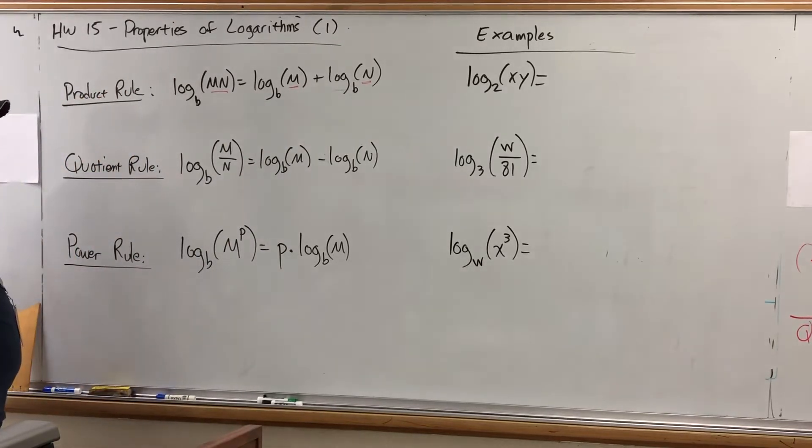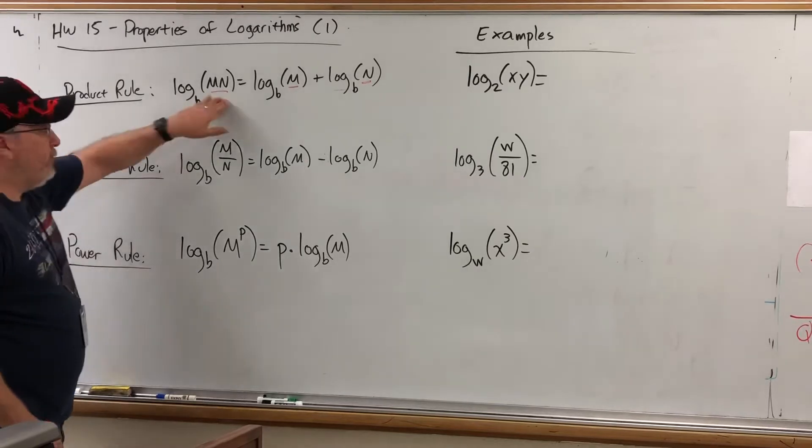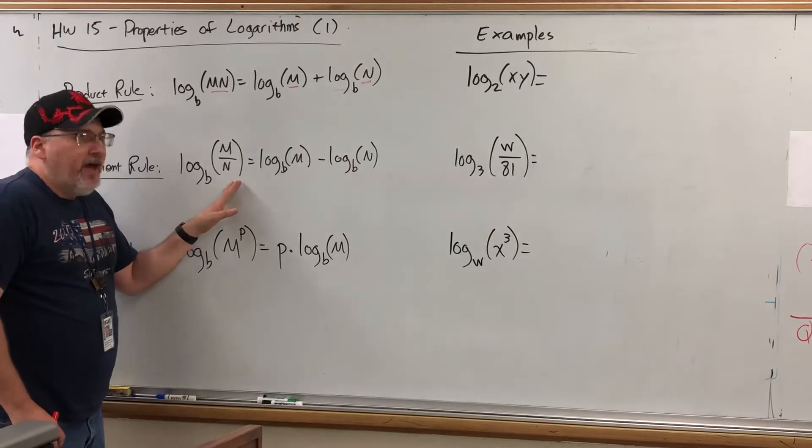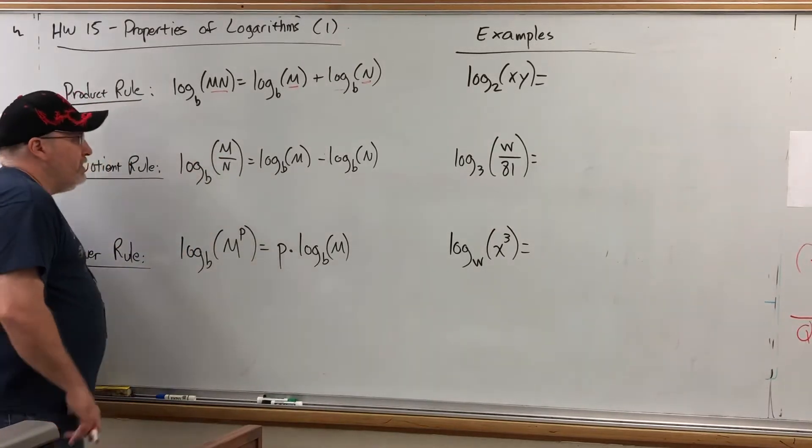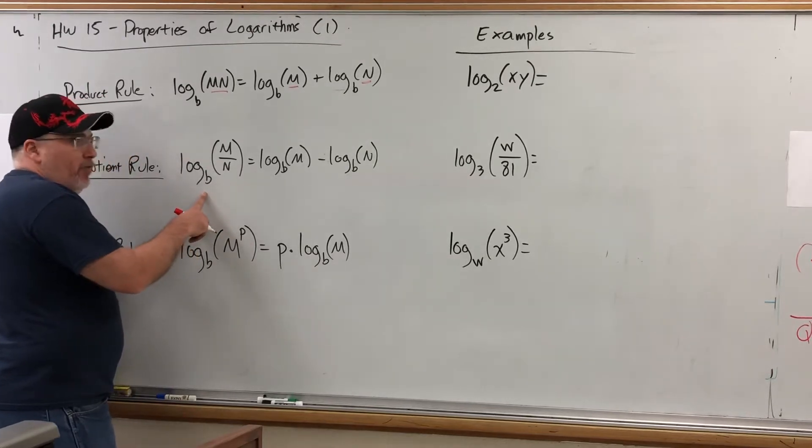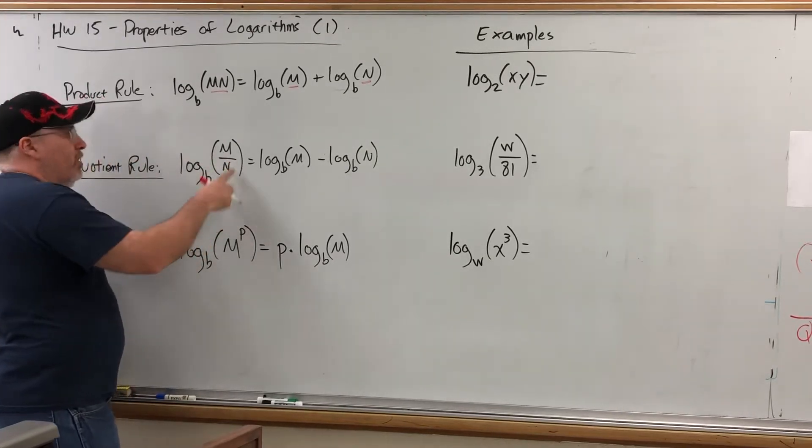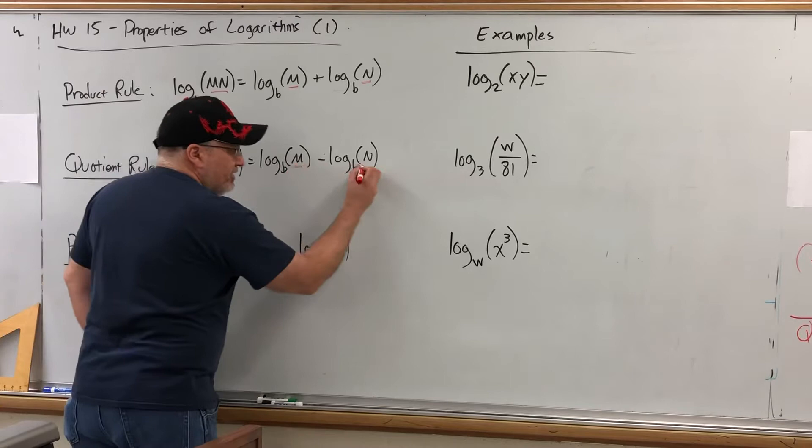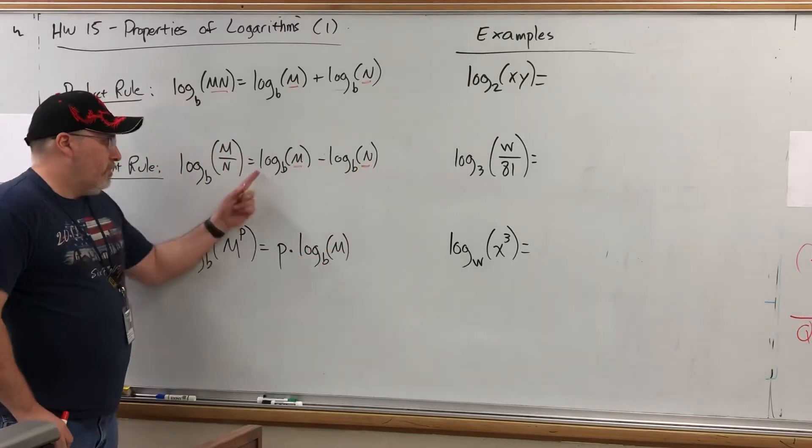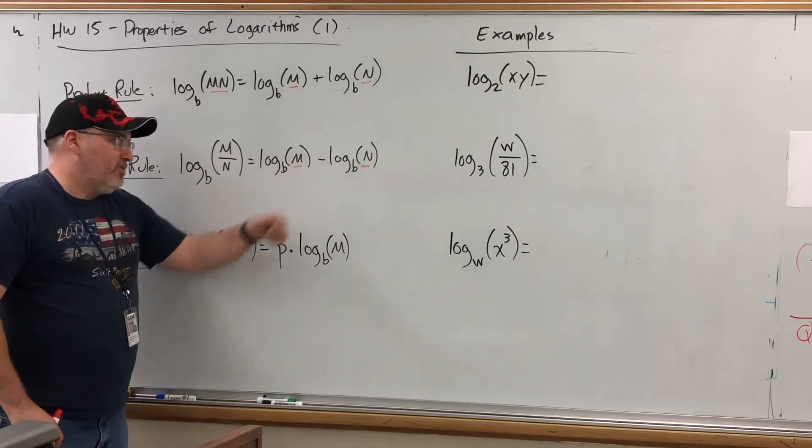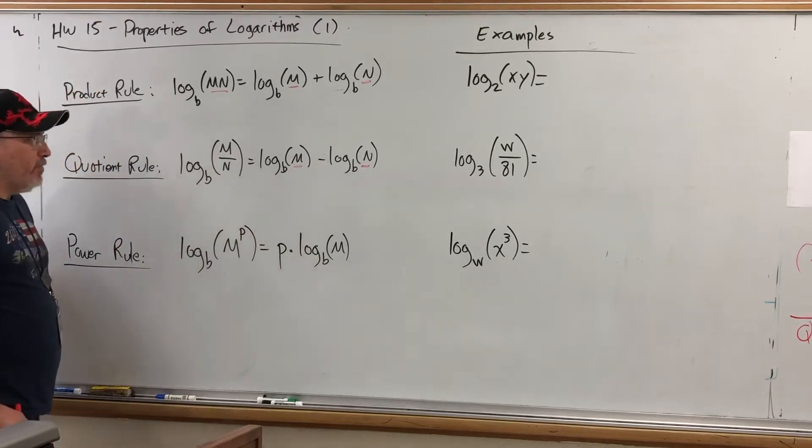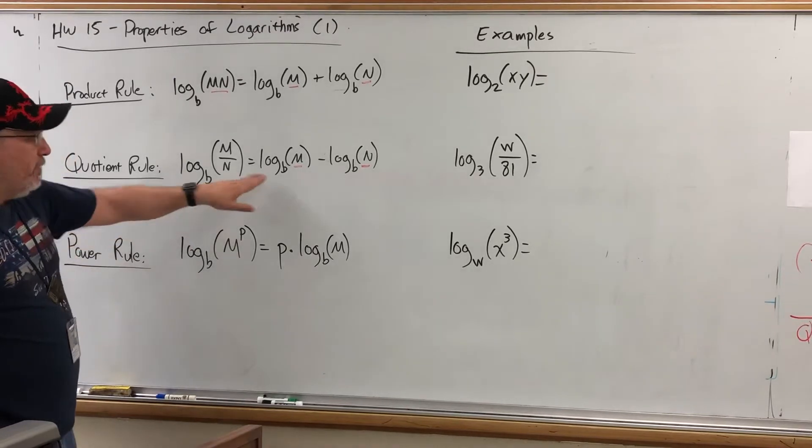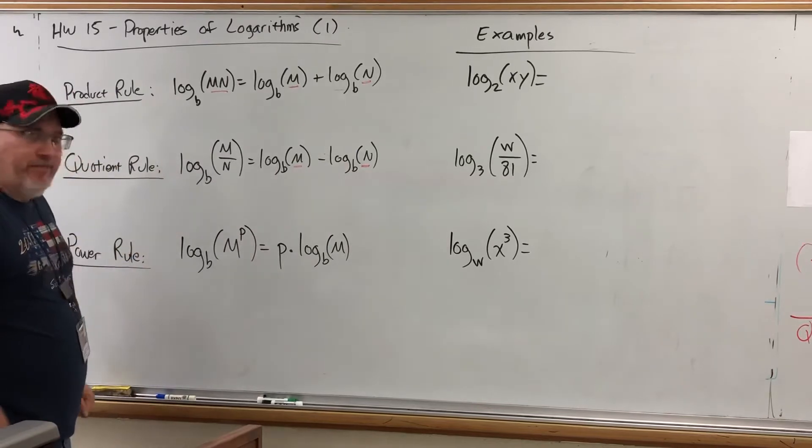The Quotient Rule pretty much says the exact same thing, except instead of the log of a product, it's equal to the log of a quotient, aka a division problem, aka a fraction. If you have a log, any base, or any allowable base, of a fraction, which we'll call m over n, then you can also separate this by giving each part of the fraction its own logarithm. It's the logarithm of the numerator minus the logarithm of the denominator. Now, one thing worth mentioning is that the base stays the same when you take these apart. So whatever the base is here, both of these have the same base.